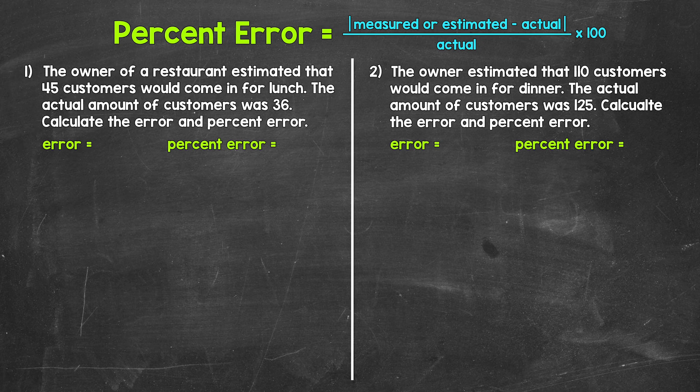Let's jump into our examples, starting with number one, where we have: the owner of a restaurant estimated that 45 customers would come in for lunch. The actual amount of customers was 36. Calculate the error and percent error.